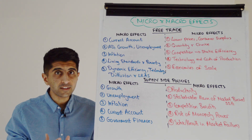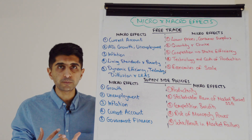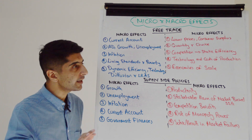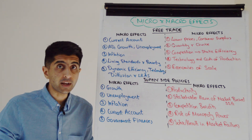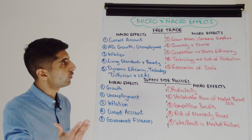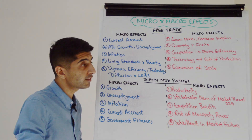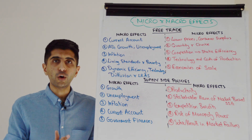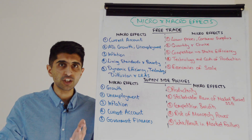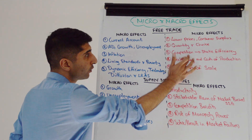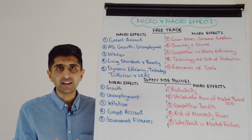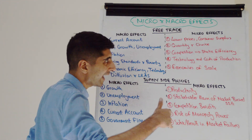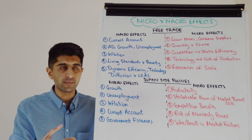We can talk about dynamic efficiency from trade, technology diffusion from trade — link that to LRAS and investment. But what about the micro effects of free trade? We know free trade can result in lower prices, higher consumer surplus, higher quantity, higher choice — not just for consumers, but also for producers too, and how that can lower cost of production if they can source inputs cheaper from elsewhere in the world. We can talk about higher competition now because there is global competition with free trade, and how that drives static efficiencies like allocative, productive, and X efficiency.